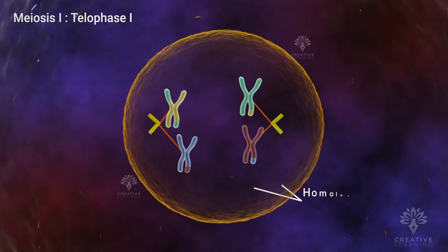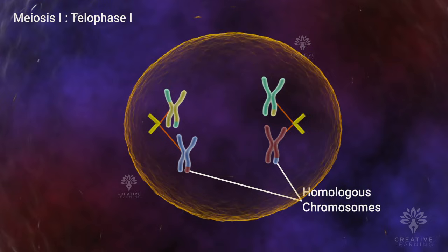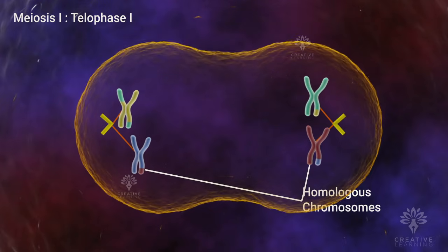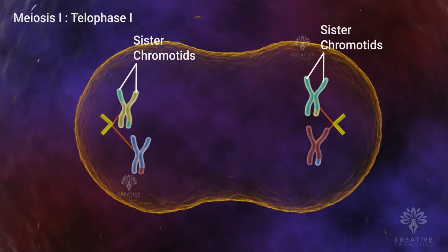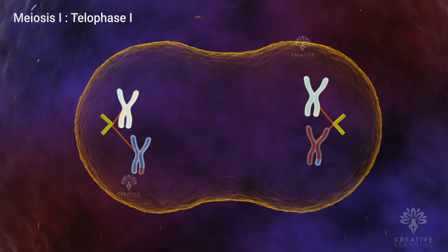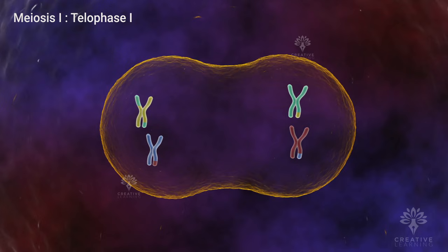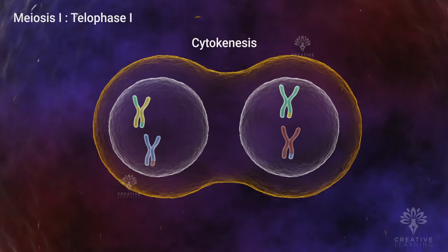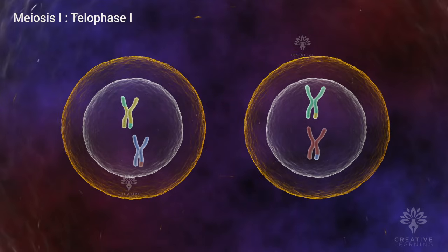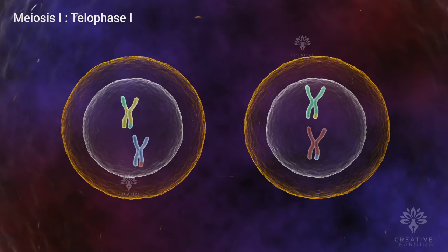With telophase I, one chromosome from each homologous pair takes position at separate poles, although they still remain in the form of sister chromatids. Each chromosome is still composed of sister chromatids, which are no longer identical due to allelic exchange and crossovers. The spindle fibers then disappear and the nuclear envelope reforms around the chromosomes. Finally, cytokinesis occurs. Meiosis I ends with two genetically distinct haploid daughter cells, each containing only one set of chromosomes consisting of paired sister chromatids.